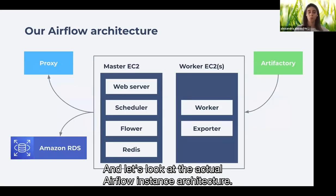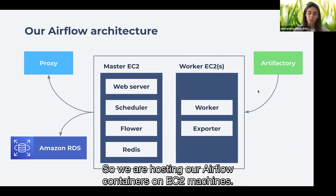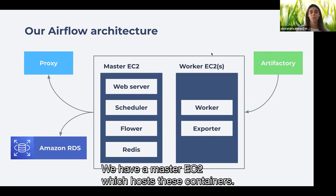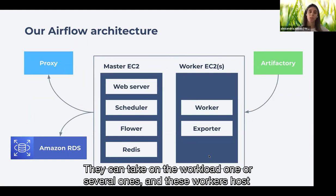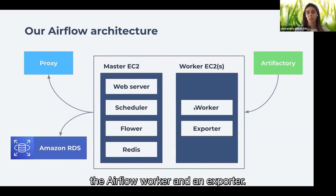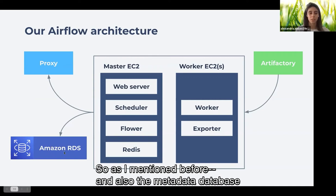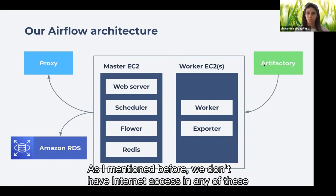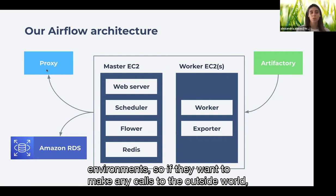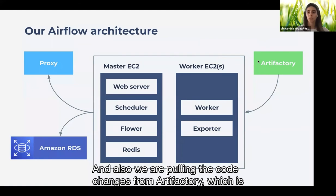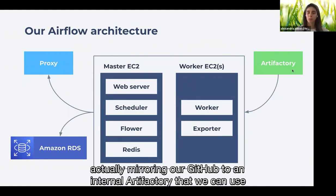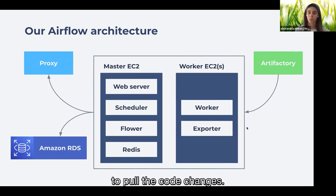Looking at the actual Airflow instance architecture: we host Airflow containers on EC2 machines. A master EC2 hosts the web server, scheduler, Flower, and Redis containers. We have one or several worker EC2s depending on the workload, each hosting the Airflow worker and an exporter. The metadata database is in Amazon RDS. Since we don't have internet access in these environments, any calls to the outside world go through a proxy. Code changes are pulled from Artifactory, which mirrors our GitHub to an internal Artifactory we can use.